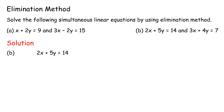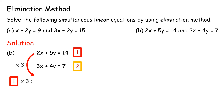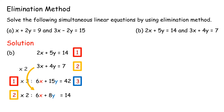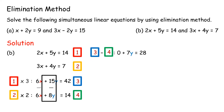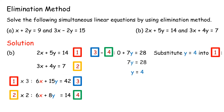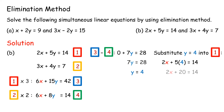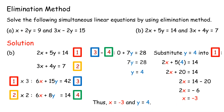Elimination method example (b): 2x + 5y = 14 and 3x + 4y = 7. Multiply equation 1 by 3: 6x + 15y = 42. Multiply equation 2 by 2: 6x + 8y = 14. Subtract equation 4 from equation 3: 7y = 28, so y = 4. Substitute y = 4 into equation 1: 2x + 20 = 14, 2x = -6, x = -3. Thus x = -3 and y = 4.